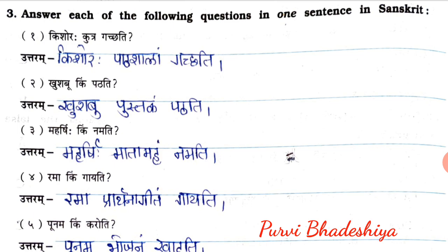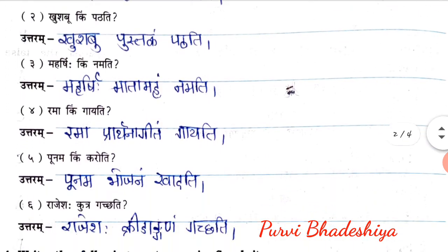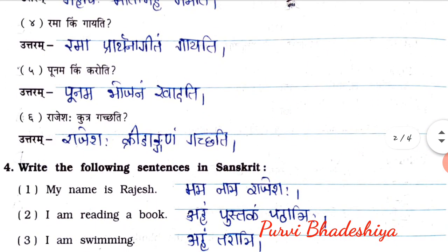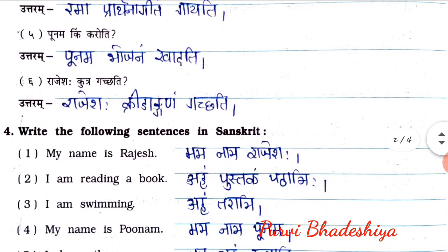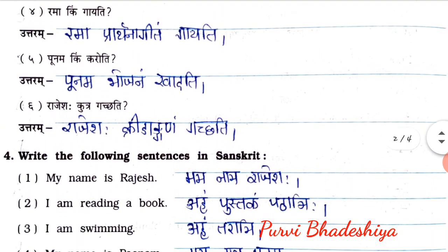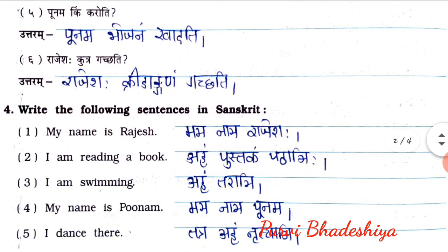Fourth: Rama Kim Gayati — the answer is Rama Pratnagitam Gayati. Fifth: Poonam Kim Karoti — the answer is Poonam Bhujanam Khadati. Sixth: Rajeshya Kutra Gachati — the answer is Rajeshya Kridanganam Gachati.